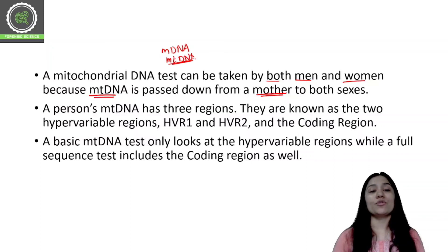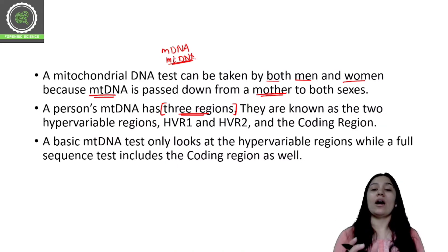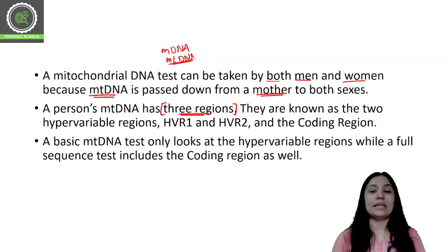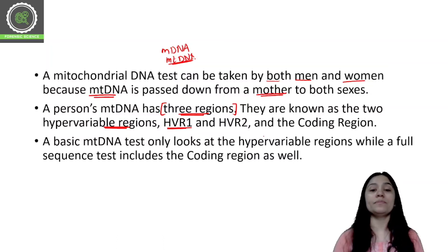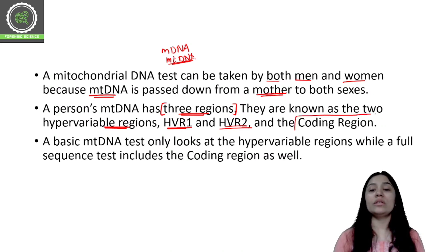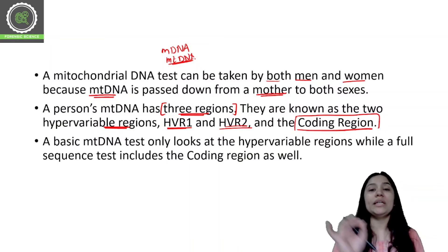Any person's mitochondrial DNA has three regions. They are also known as two hypervariable regions: Hypervariable Region 1 (HVR1) and Hypervariable Region 2 (HVR2), and then we have the coding region. So there are three particular regions in mitochondrial DNA: one coding region and two hypervariable regions, HVR1 and HVR2.